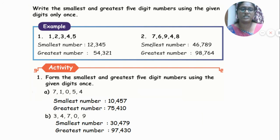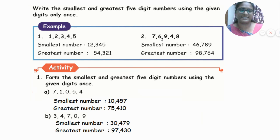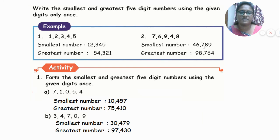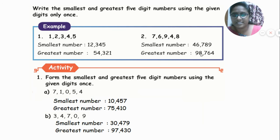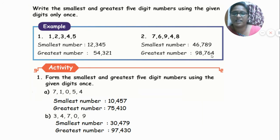Next set of digits: 4, 6, 7, 8, 9. Smallest number: arrange ascending — 4, 6, 7, 8, 9 — giving 46,789. Greatest number: arrange descending — 9, 8, 7, 6, 4 — giving 98,764.